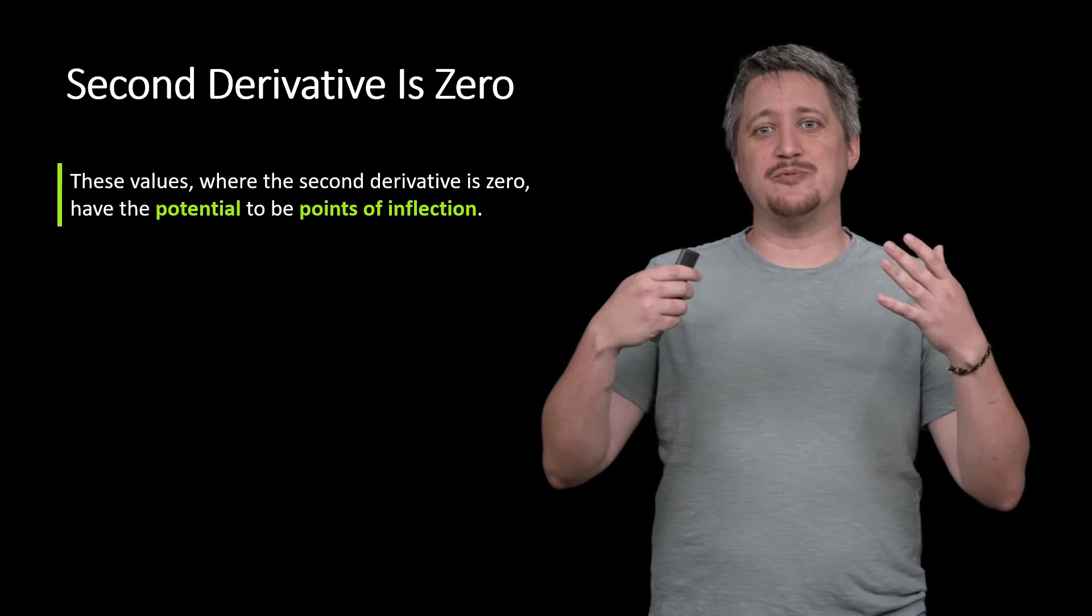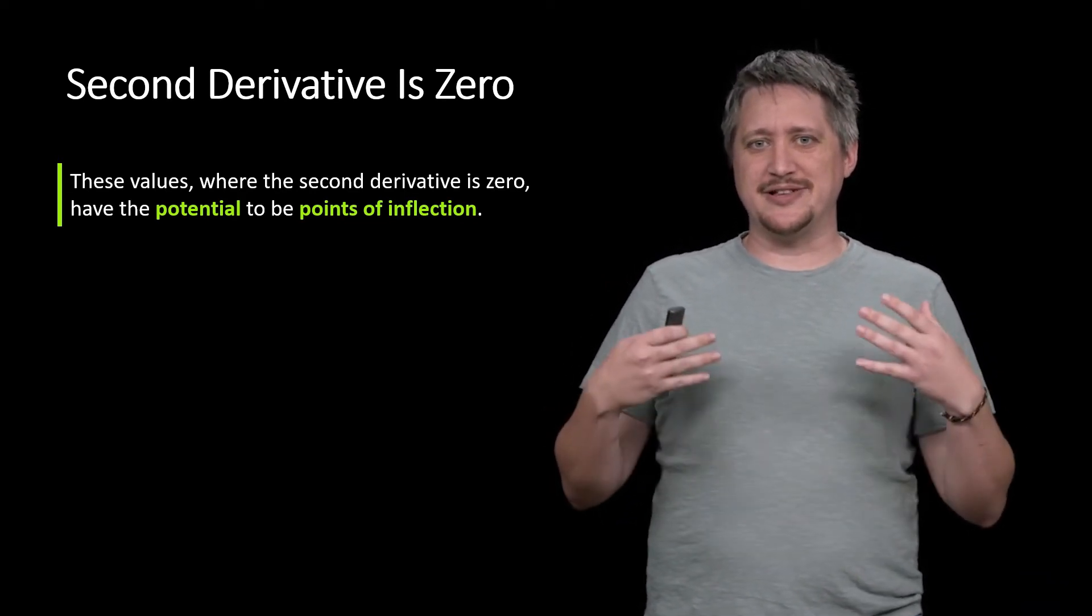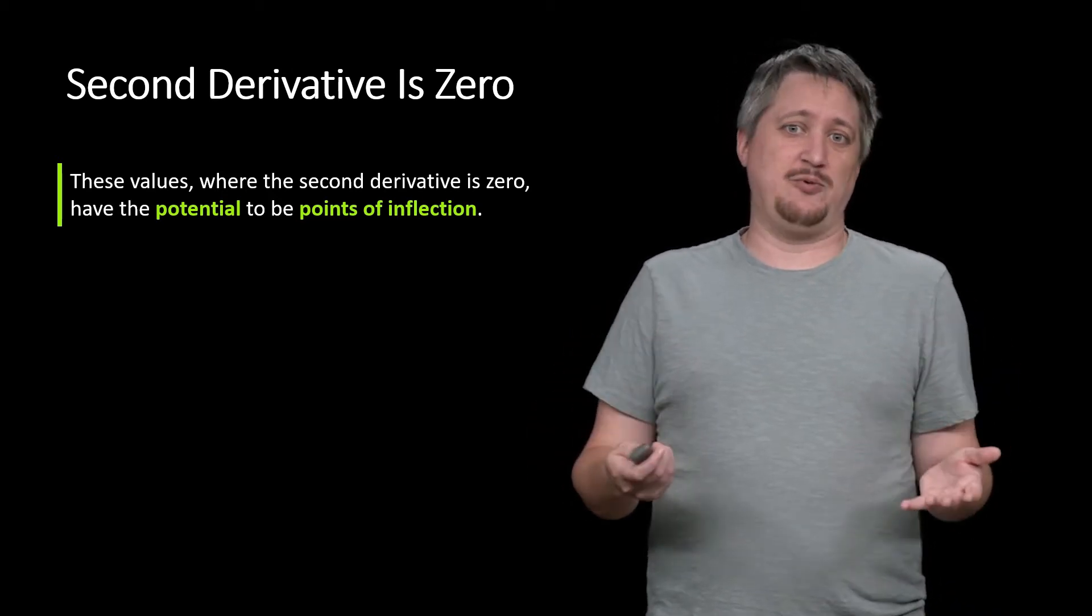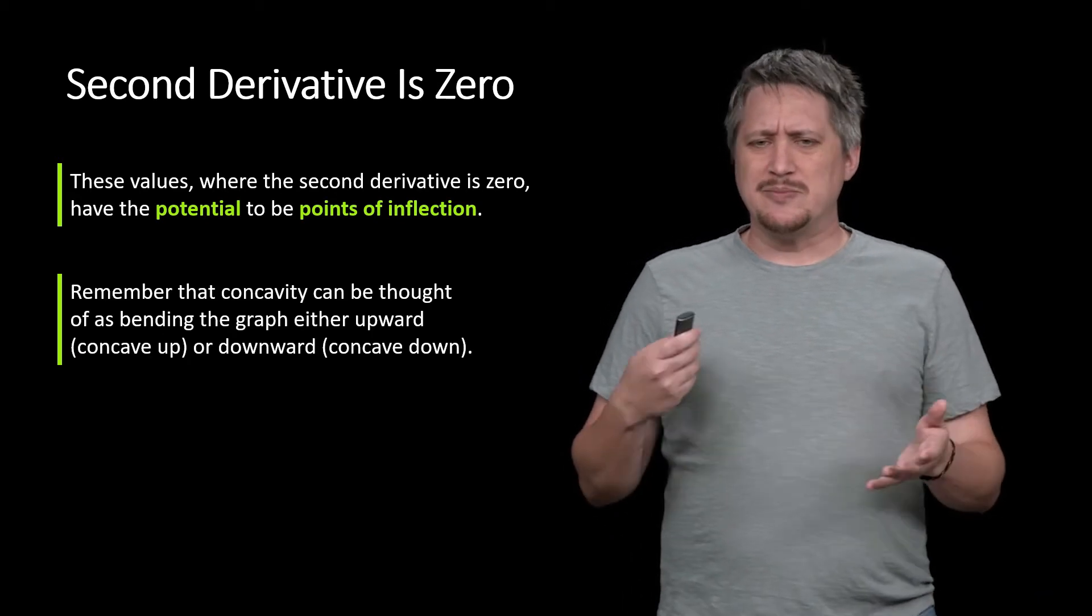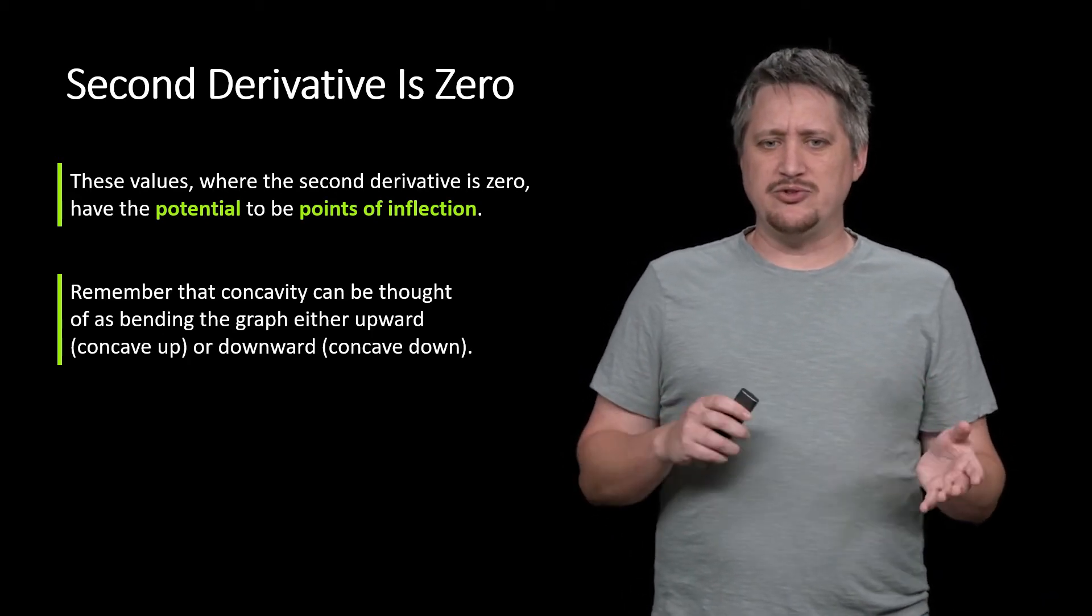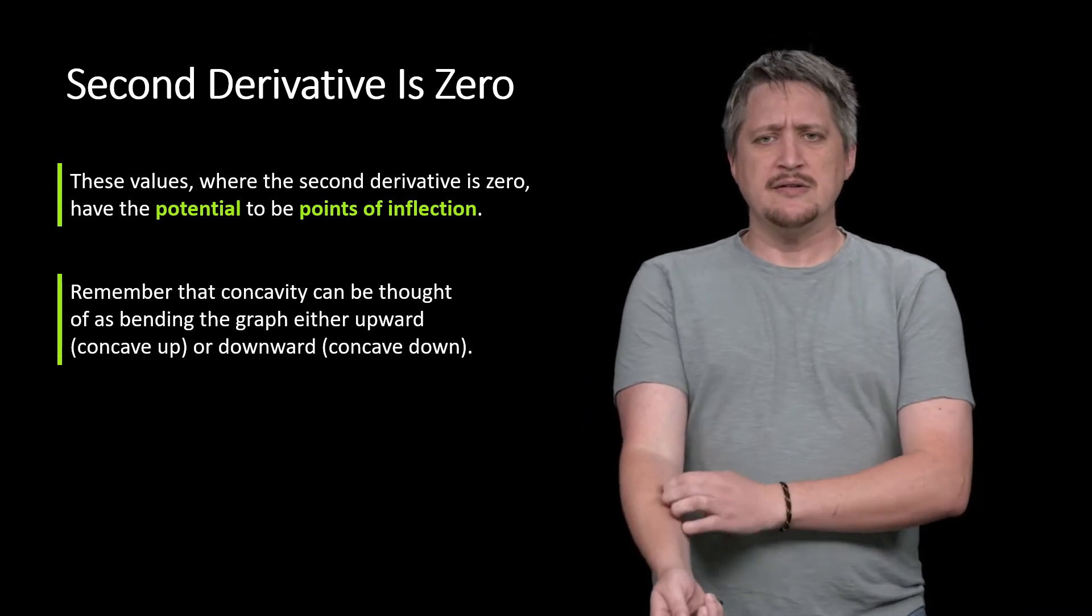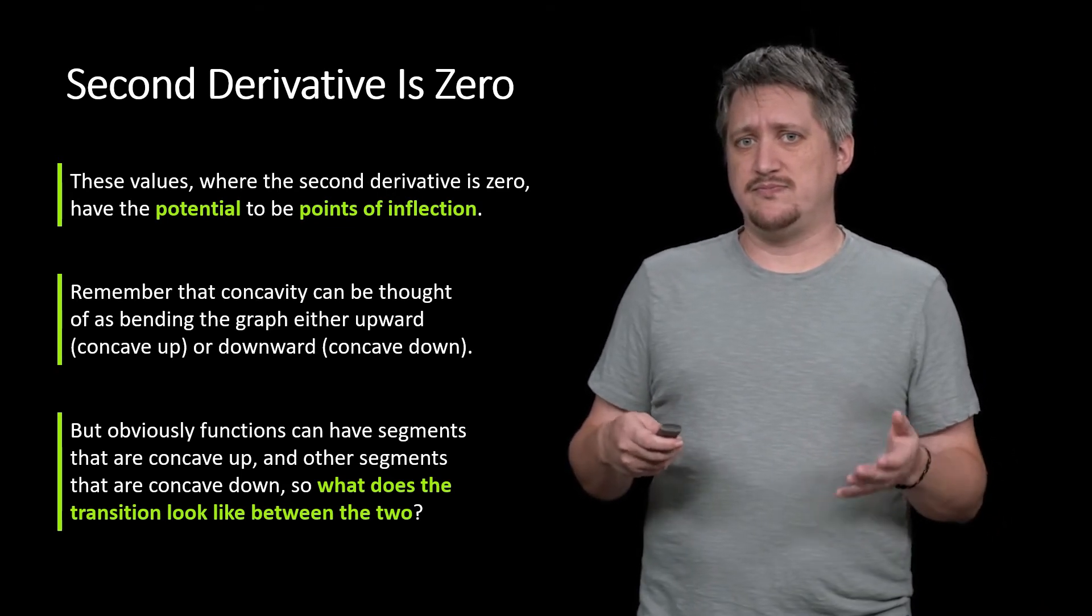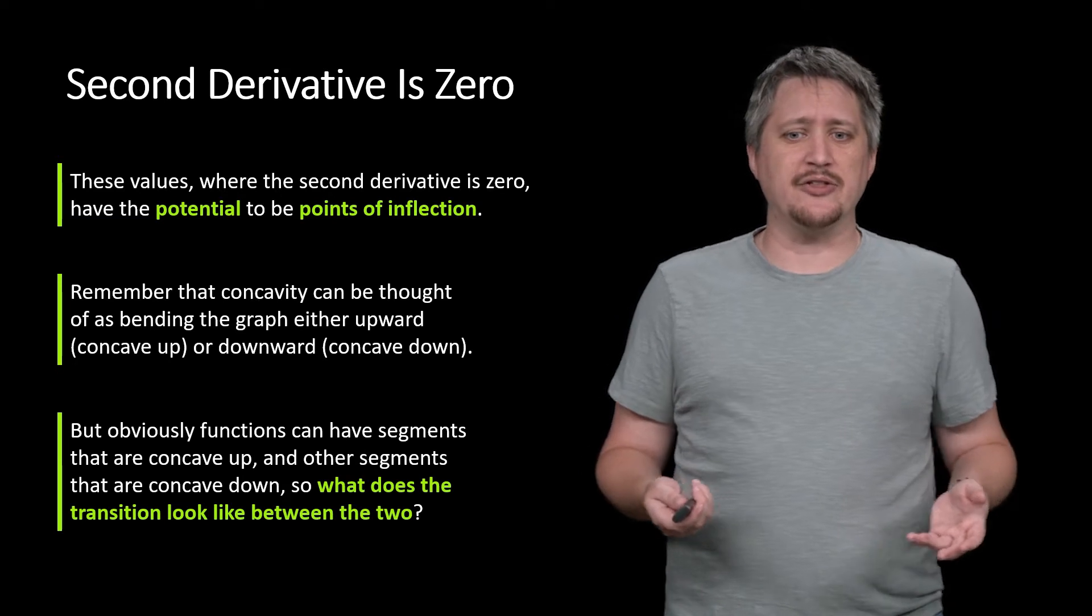And the thing we call this is the points of inflection. So it's sort of a strange thing to think of initially, which is why it's weird to jump into this directly. But hopefully by the end of this video, we're going to try to get a nice intuition about what these things are and why we care about them. Remember, concavity, we usually think of this as bending the graph upward or downward. But the same function could have segments that are concave up and segments that are concave down.